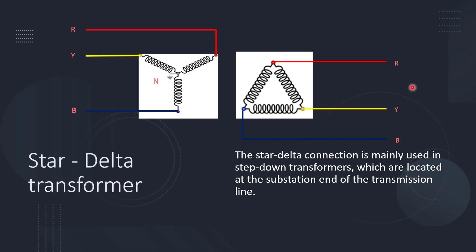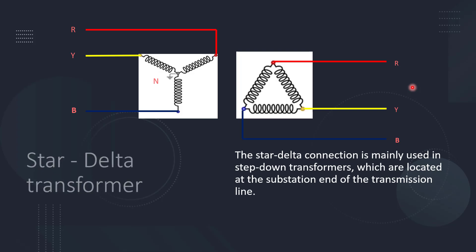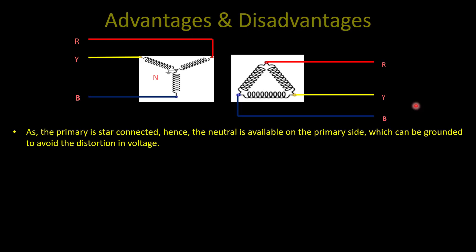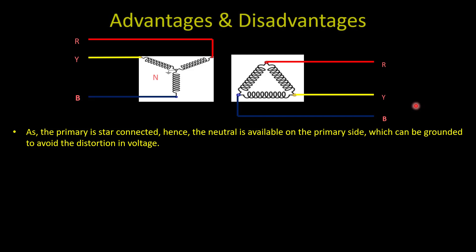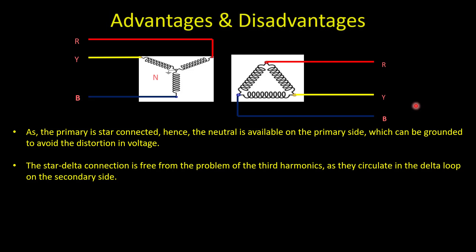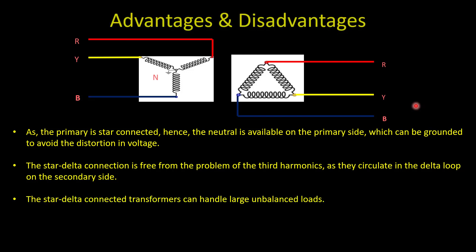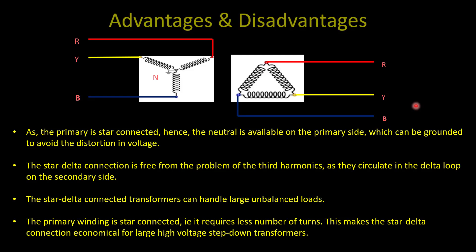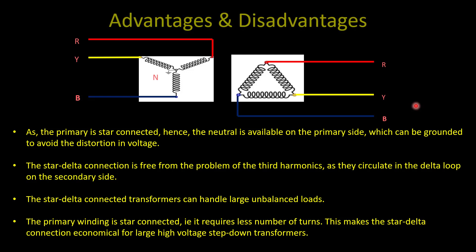Another connection is star-delta transformer. The star-delta connection is mainly used in step-down transformers located at the substation end of the transmission line. Advantages: as the primary is star-connected, neutral is available on the primary side, which can be grounded to avoid distortion in voltage. A star-delta connection is free from third harmonics, as they circulate in the delta loop on the secondary side. A star-delta connected transformer can handle large unbalanced loads. Since primary winding is star-connected, phase voltage is less than line voltage, so fewer turns and less insulation are needed, making it economical for large high-voltage step-down transformers.